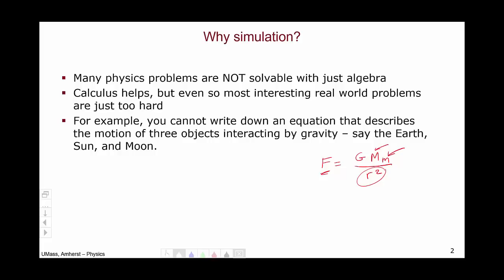So far apart, it's perfectly reasonable to treat them as points. You cannot write down an equation that describes the motion of the Sun, the Earth, and the Moon. Even that simple three-object system with this seemingly simple-looking force law from the 17th century, you can't write down an exact solution. So, what you have to do is go to simulation.